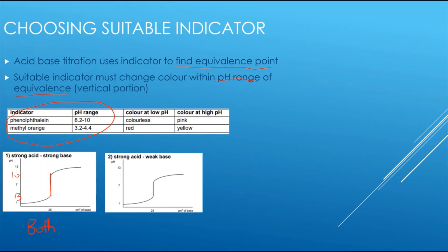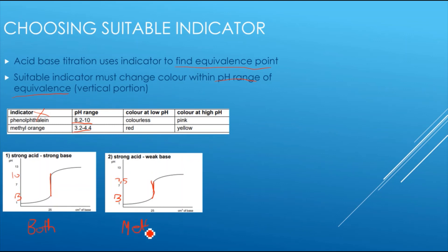For a strong acid and weak base titration, the vertical portion starts around pH 3 and finishes just above pH 7 — approximately 7.5. Phenolphthalein changes colour above that range, so it cannot be used here. Methyl orange, however, falls within that range, so methyl orange is the appropriate indicator for a strong acid–weak base titration.